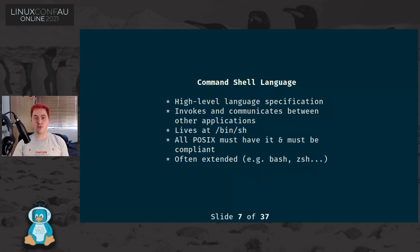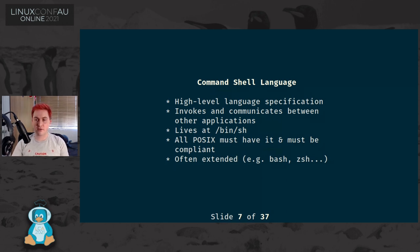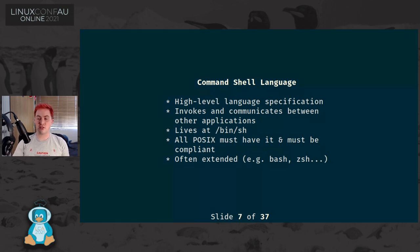But the one I care about most today is the POSIX command shell language. It's a high-level language specification. It exists to invoke other programs and applications within the operating system and allow them to communicate with each other and sequence them together. It lives as a process at /bin/sh. For an operating system to be POSIX compliant, that application has to exist at that directory and behave as described by the POSIX command shell specification. This language is often extended in other shells such as Bash and ZSH, but what I care about today is only the parts specified by the POSIX standard.